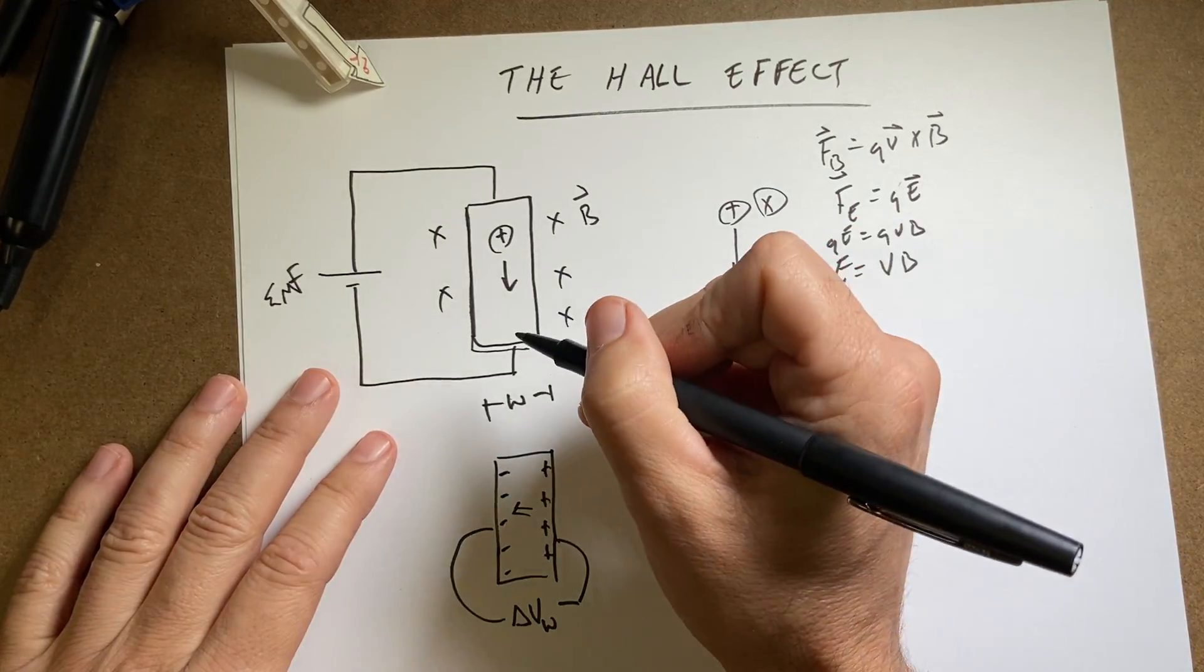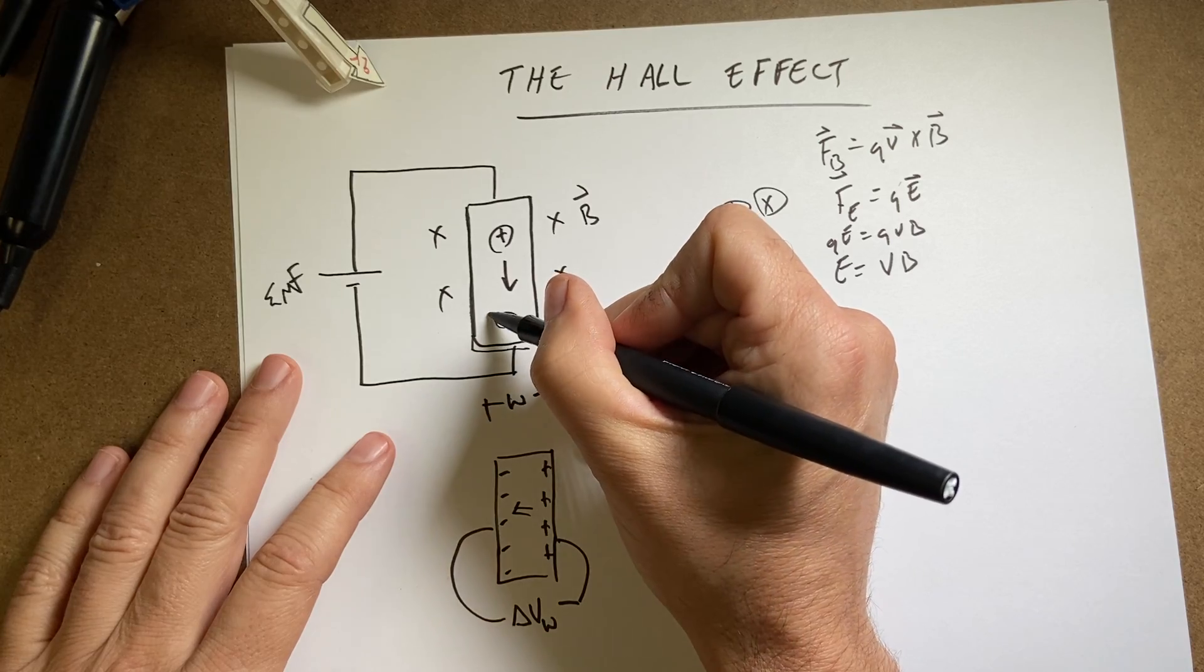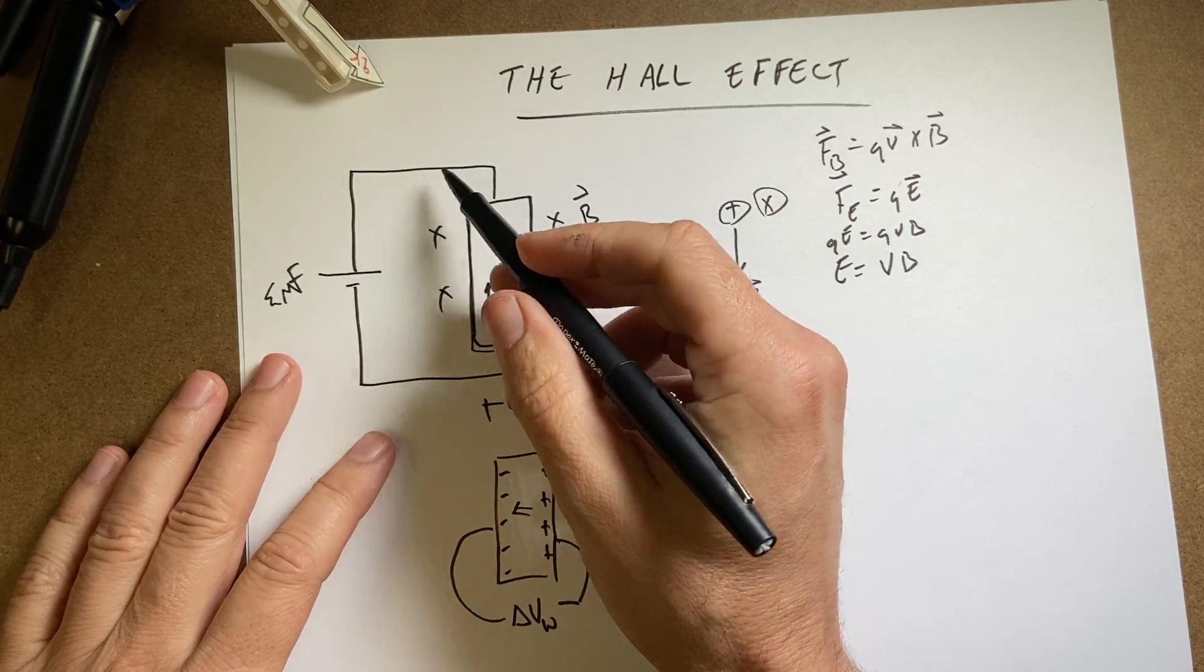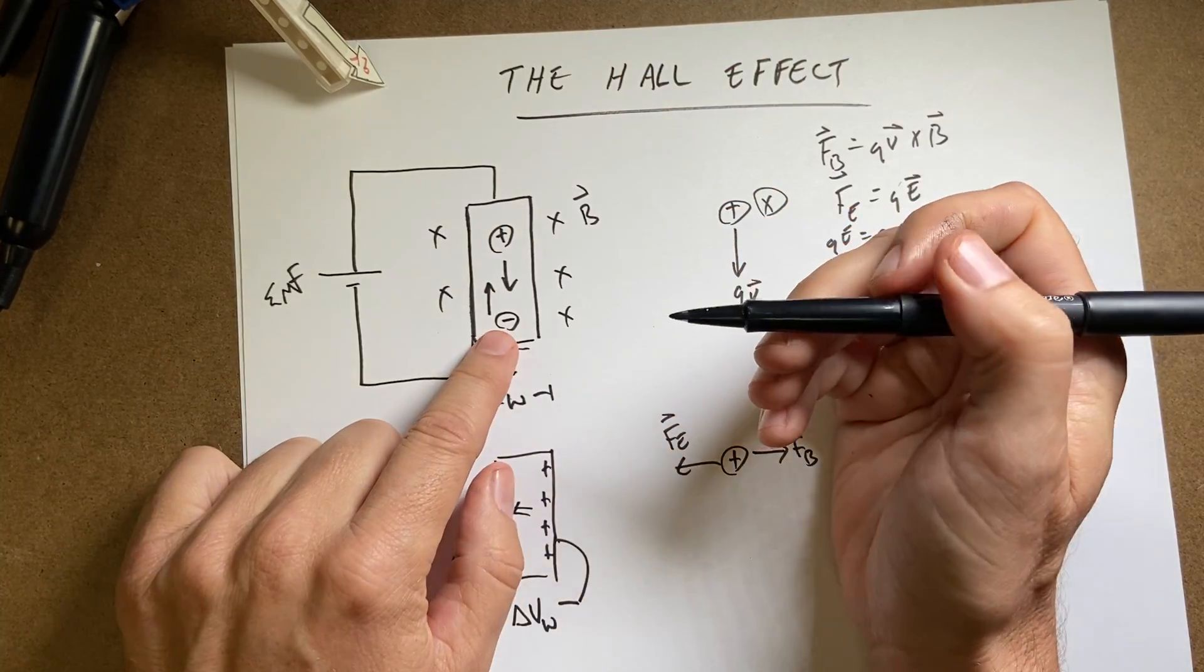Okay, now suppose I don't have positive charges. Suppose I have negative moving charges. And so for the same circuit, these negative charges would be moving that way to make the electric current going this way. What's going to change?